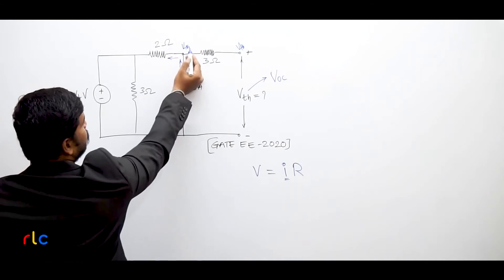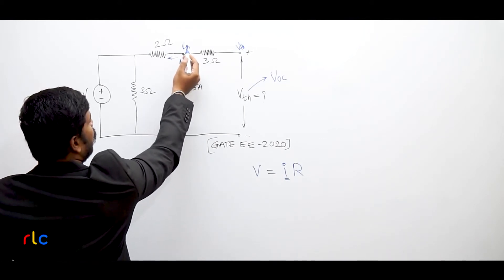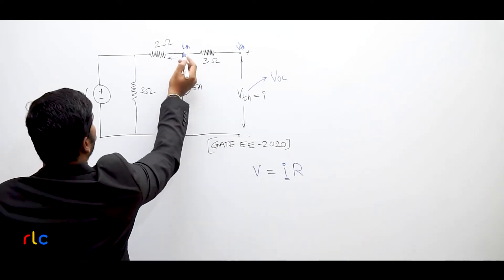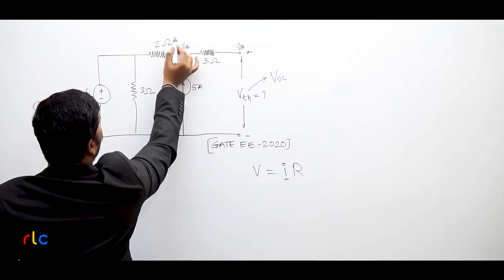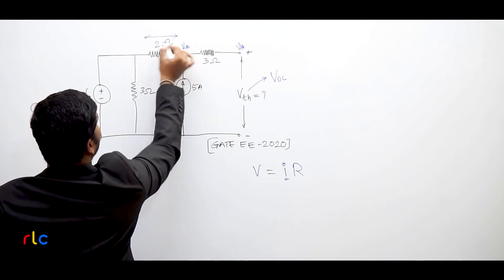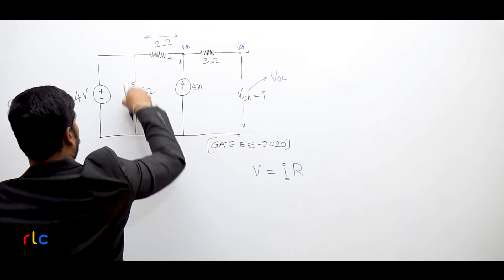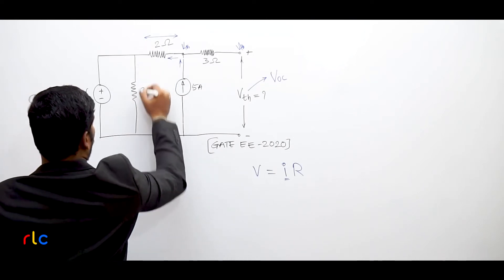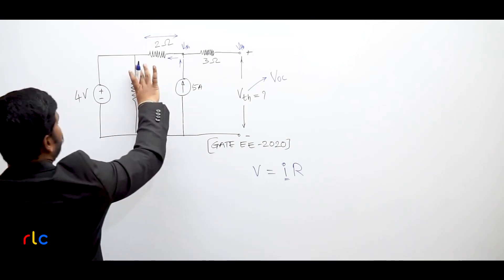So if this is the VTH, what could be the VTH? VTH is nothing but, I can say, the voltage that is dropping across 2 Ohms and the voltage across the 3 Ohms. So what is the voltage across the 3 Ohms?